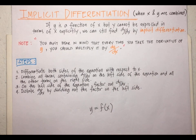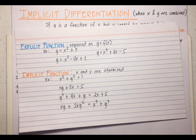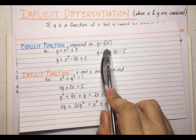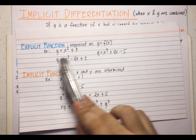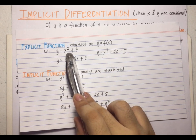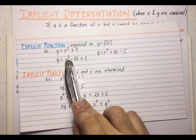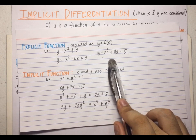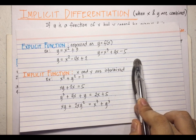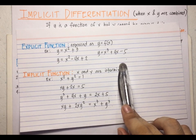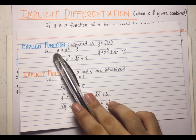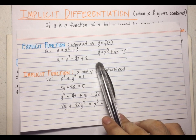But first, what's the difference between explicit and implicit function? An explicit function is expressed as y = f(x). Examples: y = x² + 3, y = x² - 4x + 2, or y = x³ + 4x - 5. So all the problems from our previous lessons were all explicit functions — functions of y in terms of x.